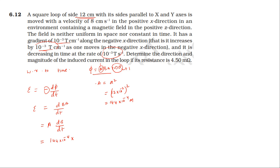Putting in the values: area is 144 into 10 power minus 4 meters squared, and dB by dt is 10 power minus 3 tesla per second. Multiplying: induced EMF equals 144 into 10 power minus 7, which gives 1.44 into 10 power minus 5 volt.